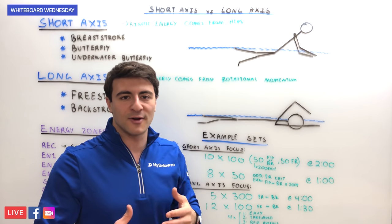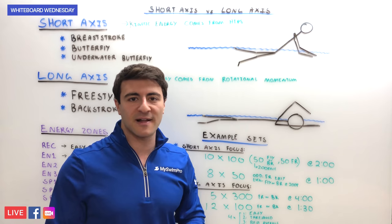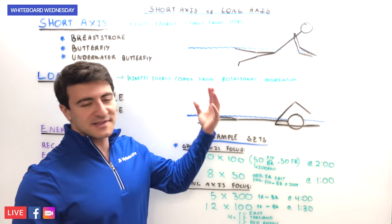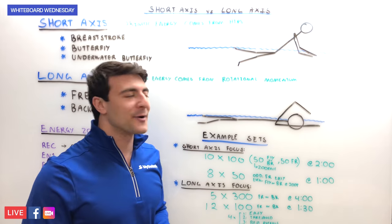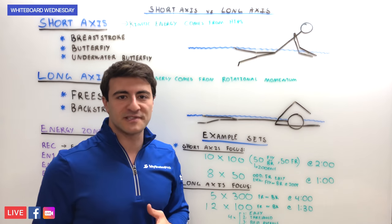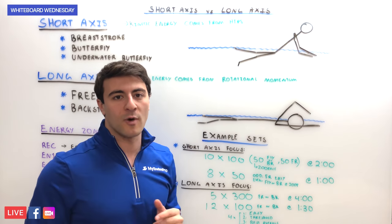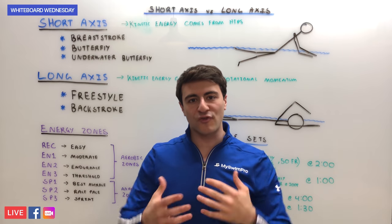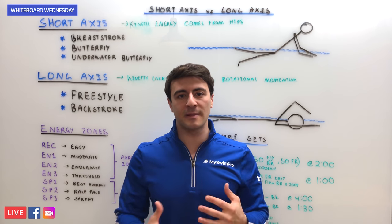Now, obviously in butterfly you can go really fast — it's right up there with freestyle. However, for the sake of this discussion, breaststroke and butterfly are the most inefficient strokes when it comes to body position in the water, and because of this, when it comes to actually training those strokes, you should train them a little bit differently.